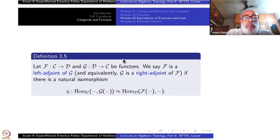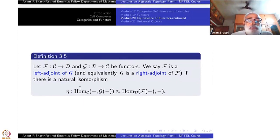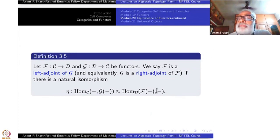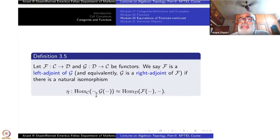Left adjoint to G, and G will be right adjoint to F. To remember: there is a natural isomorphism — a natural transformation which is an isomorphism — from one functor to another functor. These are actually bifunctors. There are two slots: one from C and one from D. This is a functor on the product category C cross D, which I will not define fully as that would consume too much time.